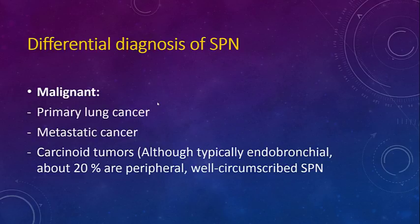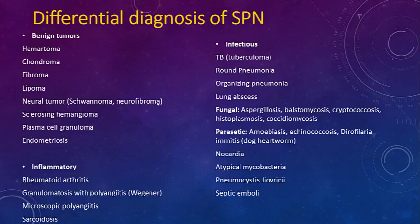When a patient comes in with an abnormal CT scan, you need to think about the differential. The most serious is malignancy — either primary lung cancer, metastasis, or carcinoid tumor, which is typically endobronchial but in about 20 percent of cases is peripheral and can present as a solitary nodule. When seeing these patients, we have to dig deeper into history and past medical history to determine the etiology of the nodule.